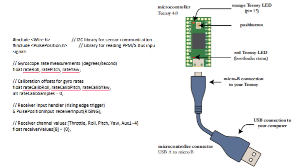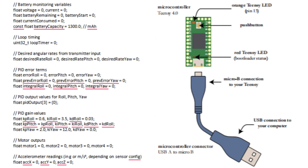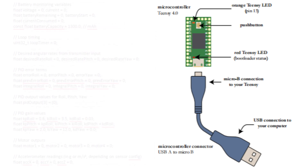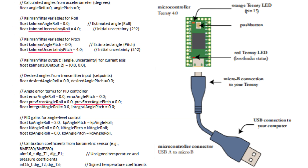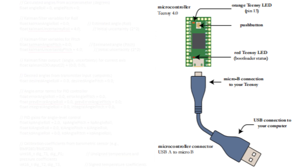Upload the code that implements Kalman filters for roll, pitch, and yaw angles using accelerometer and gyroscope data, and applies PID control for each axis to stabilize the quadcopter drone.